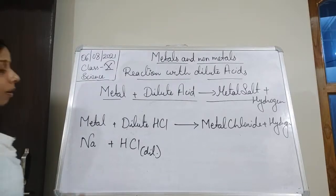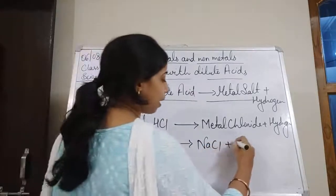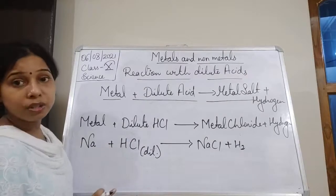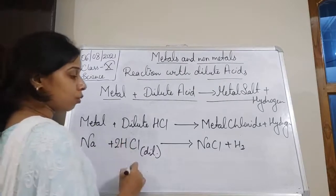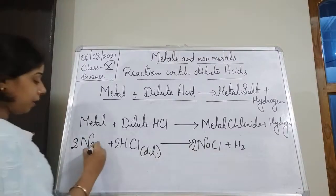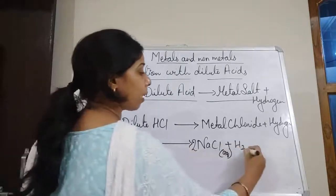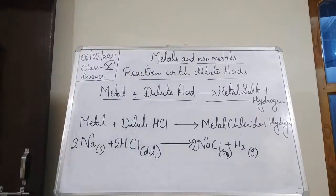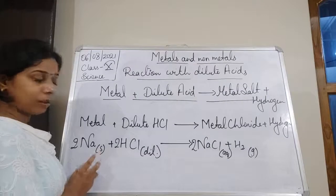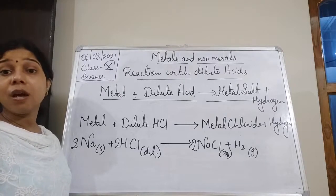Sodium reacts with dilute hydrochloric acid (aqueous) to form NaCl (sodium chloride) and hydrogen gas is released. Balancing: sodium is balanced, chlorine is balanced, but hydrogen is not balanced, so we write 2HCl, making it 2NaCl and 2Na. This is an extremely violent reaction because sodium is very reactive and reacts very fast with dilute acid.